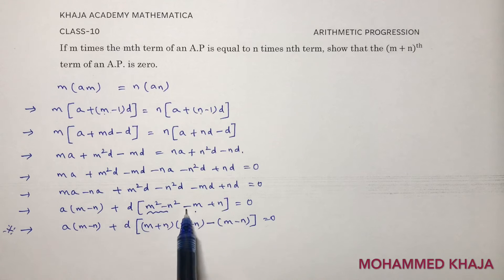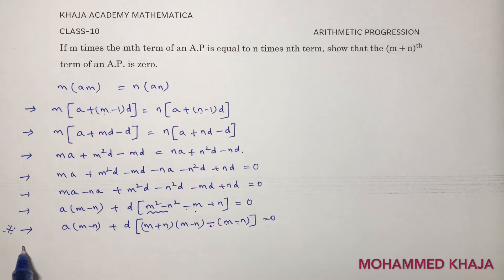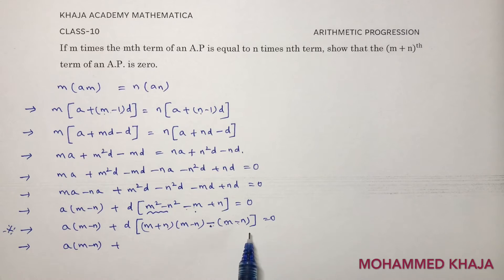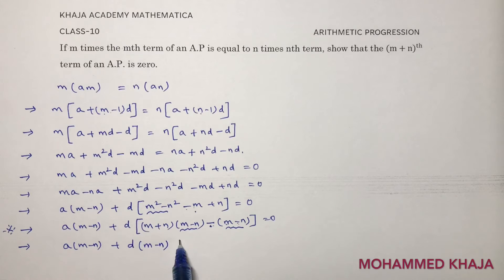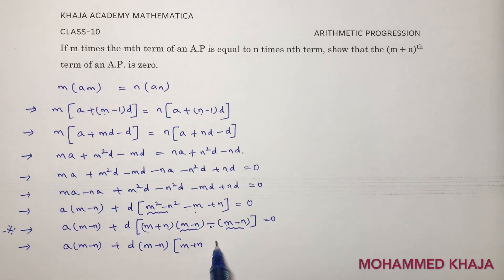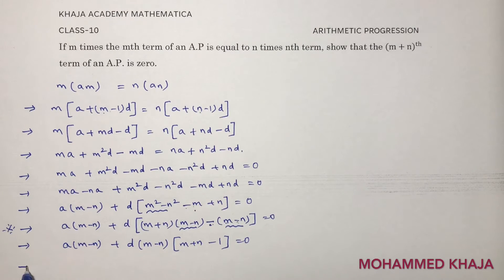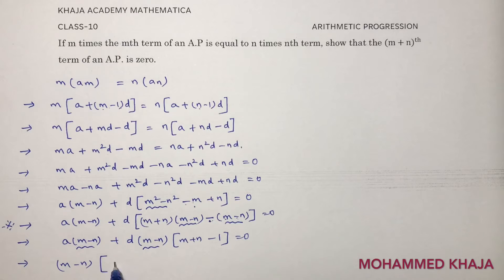This step is most important. Taking minus common gives minus(m − n), because minus times minus gives plus n. So we have: a(m − n) + d[(m + n)(m − n) − (m − n)]. Taking (m − n) common from the d terms, you are left with (m + n) from the first part and minus 1 from the second, giving d(m − n)(m + n − 1).